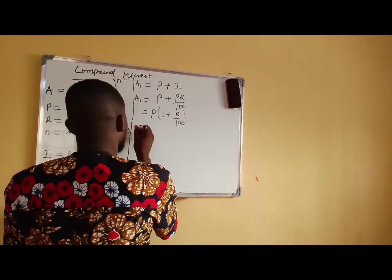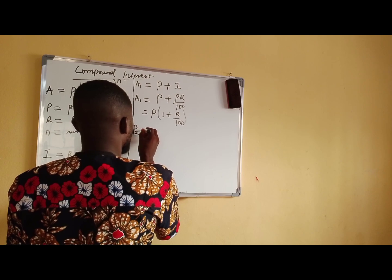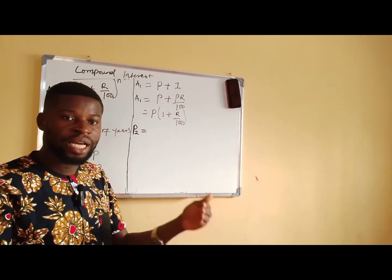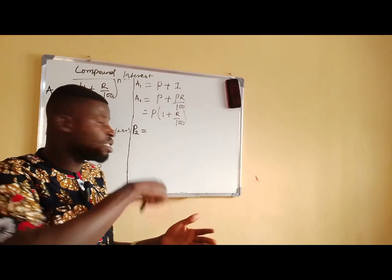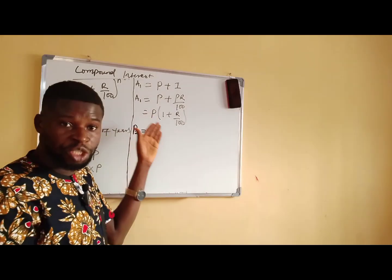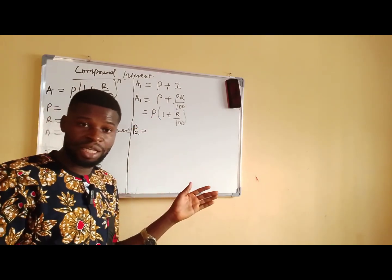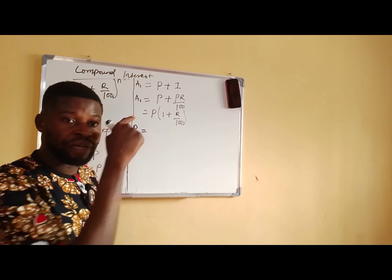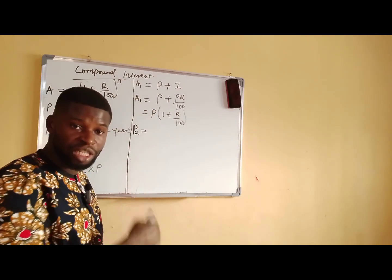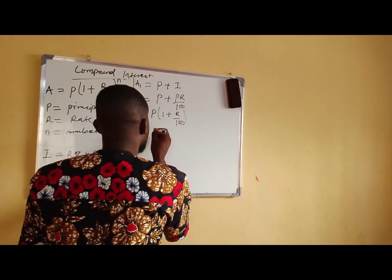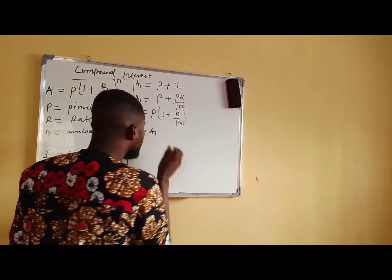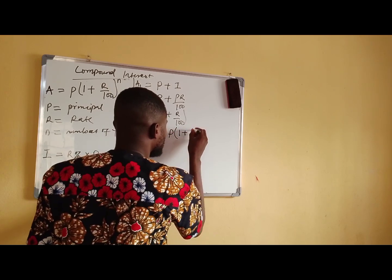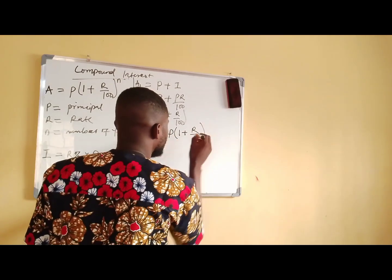Now, P2 will be equal to — this P2 is the capital you are starting with in the second year, which is the same thing as the amount you realized in the first year. Your principal in the second year is the same thing as the amount of the first year. So P2 is equal to A1, and A1 is the same thing as P in bracket 1 plus R all over 100.